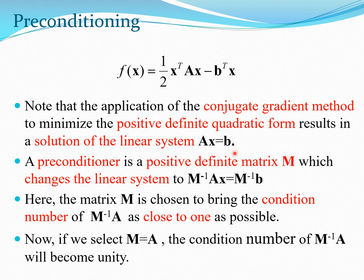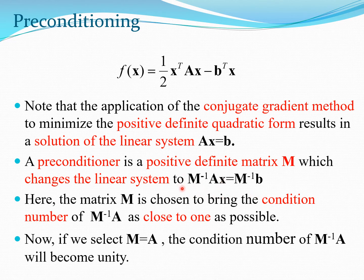A preconditioner is a positive definite matrix M that transforms the linear system Ax = b into a modified form. Mathematically, the two systems look similar, but depending on the choice of M, the modified system may become simpler to solve numerically. The aim is to choose M such that the condition number of M⁻¹A is brought as close to 1 as possible.